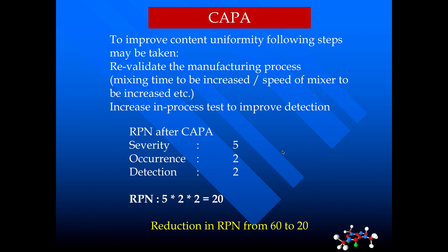To improve the content uniformity, the following steps may be taken: we might have to revalidate the manufacturing process, review and increase the mixing time, increase the speed of the mixer to improve content uniformity, and increase in-process testing by testing more samples during the process so as to detect any failure during production.